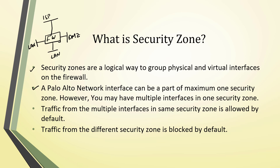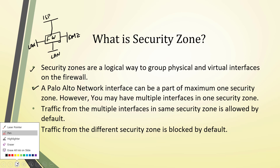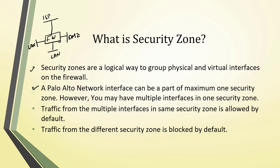A Palo Alto Networks interface can be part of a maximum of one security zone. On a particular interface you can't assign an additional zone — if I already assigned DMZ, I can't assign a different zone. However, you may have multiple interfaces in one security zone. For example, a LAN zone can contain two different interfaces.